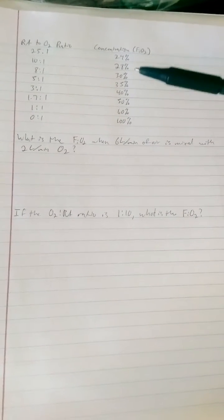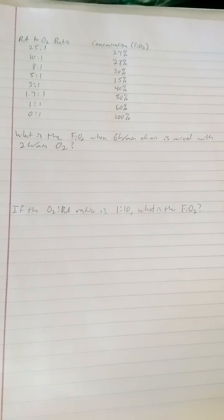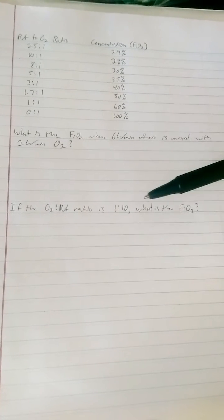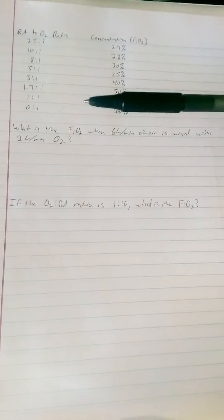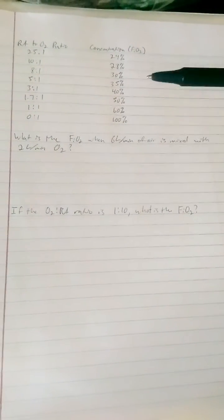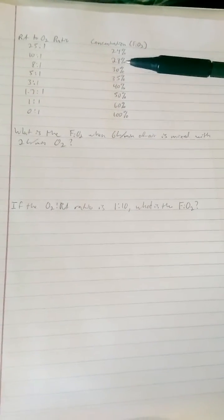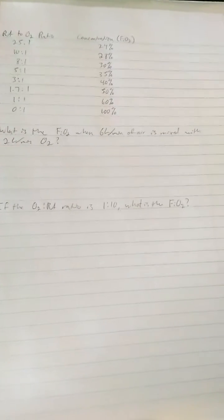These are kind of your common ratios or concentrations that you would have in something like a Venturi mask. So these are the ones that are kind of nice to memorize. But I'm going to also show you a trick today, another formula, so that if you didn't know 10 to 1 is 28 percent, how could you figure that out if you didn't just know that?